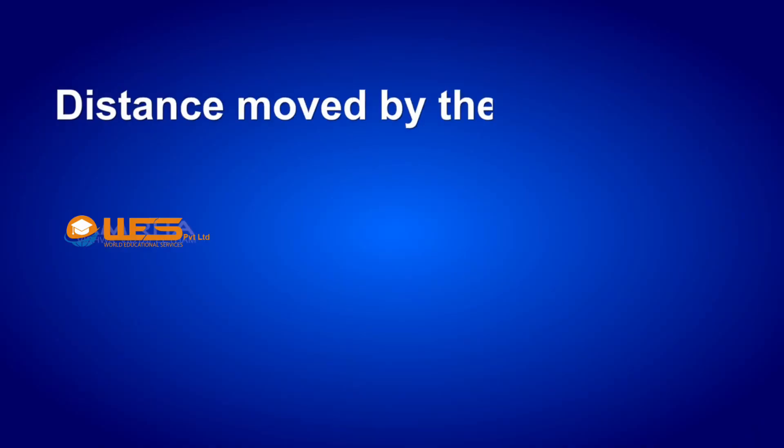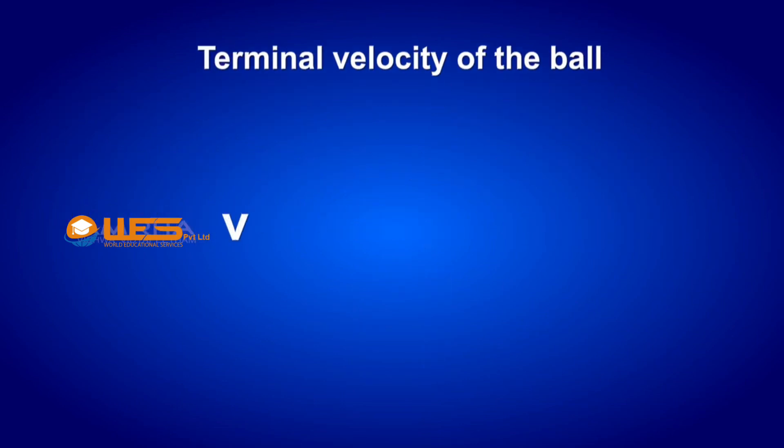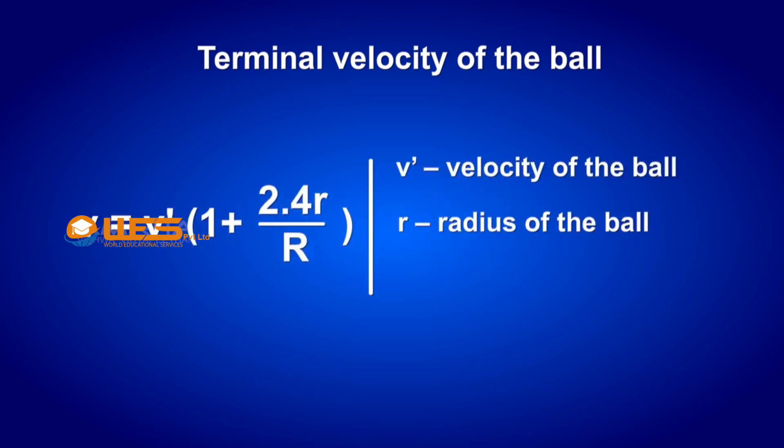If the distance moved by the ball is d and the time taken to travel is t, then velocity v' = d/t. Then the terminal velocity of the ball can be calculated using the relation v = v'(1 + 2.4r/R).